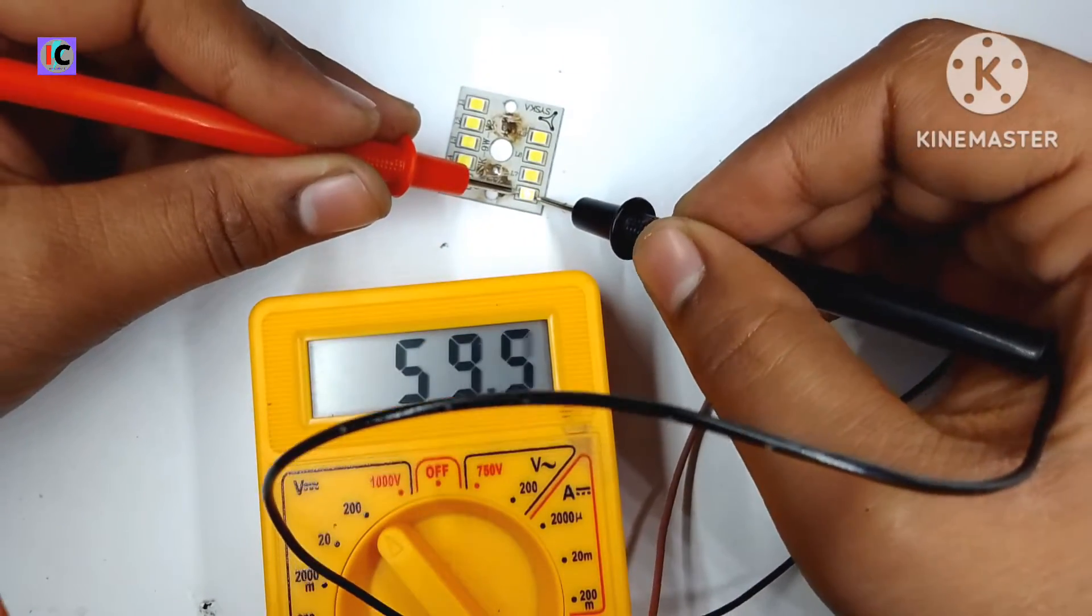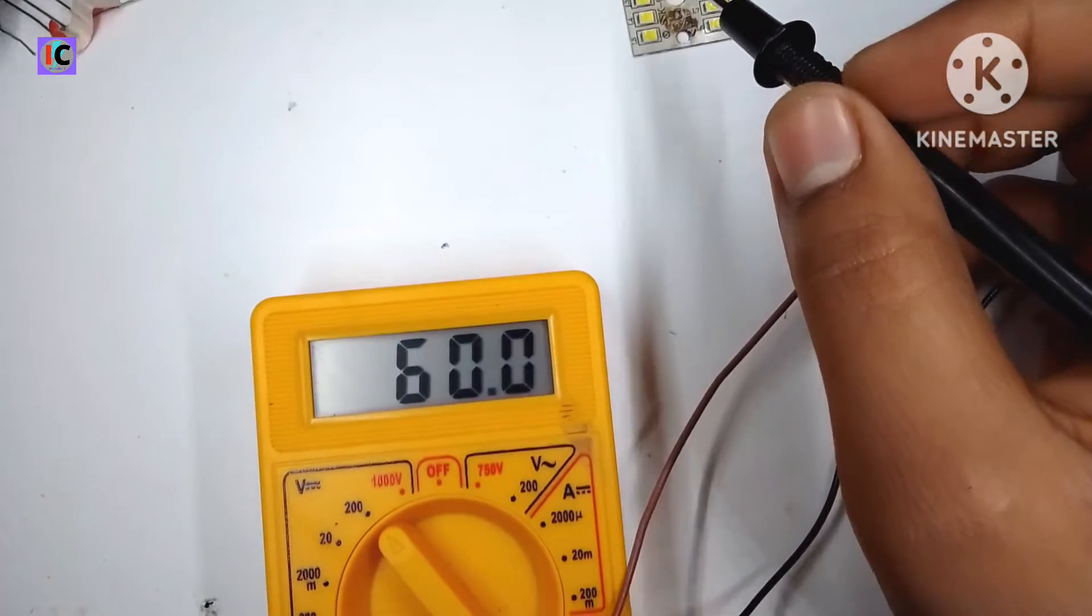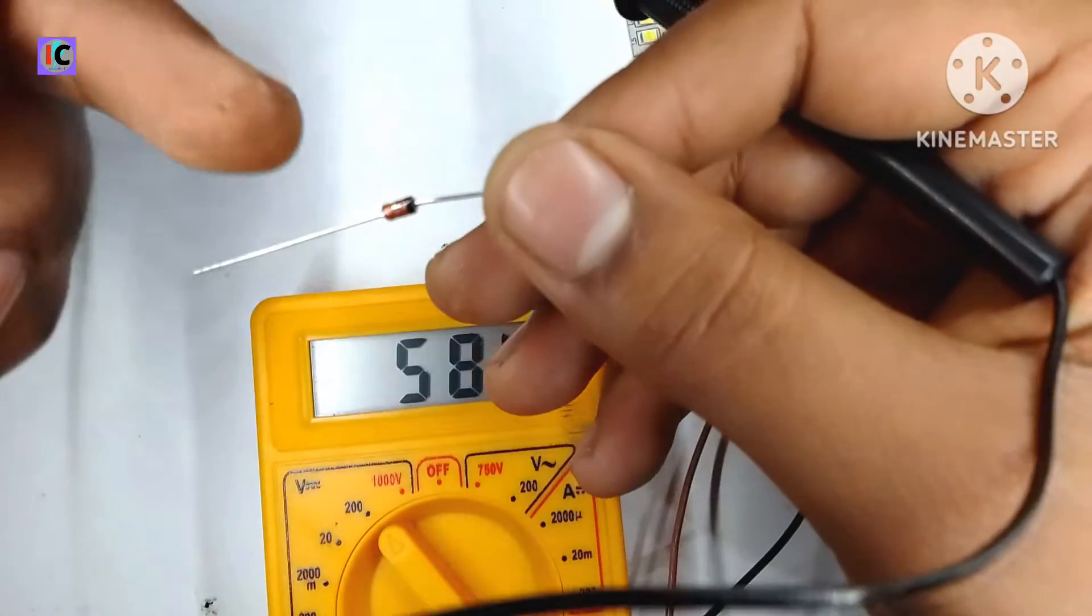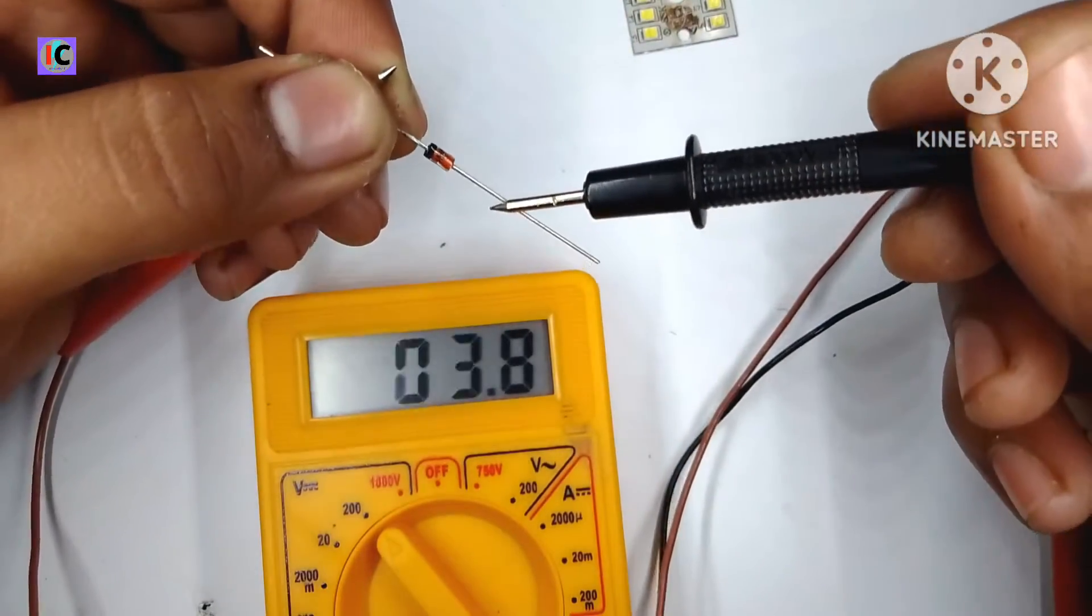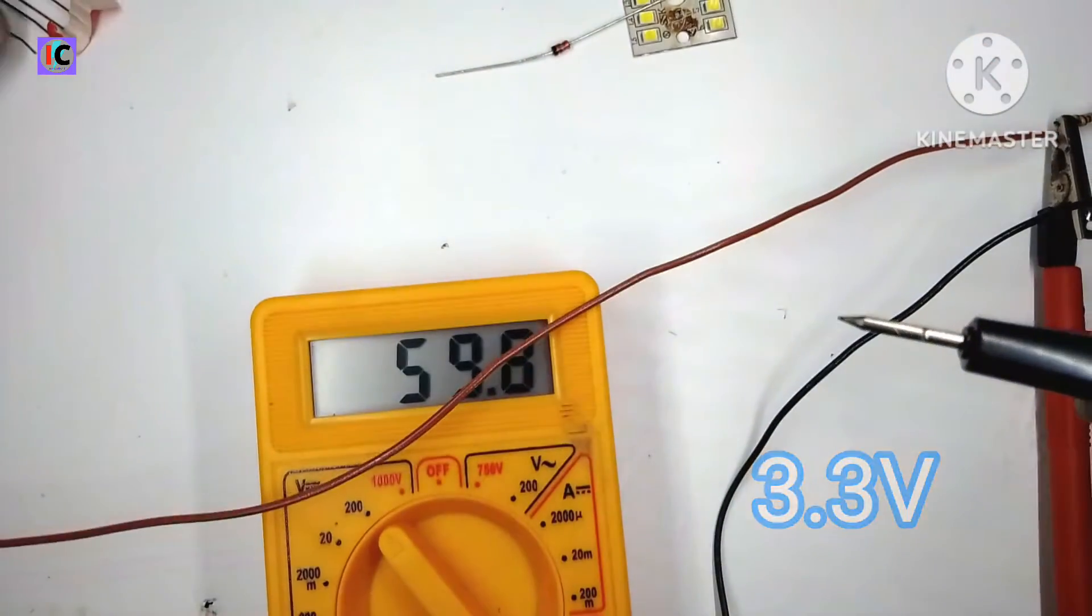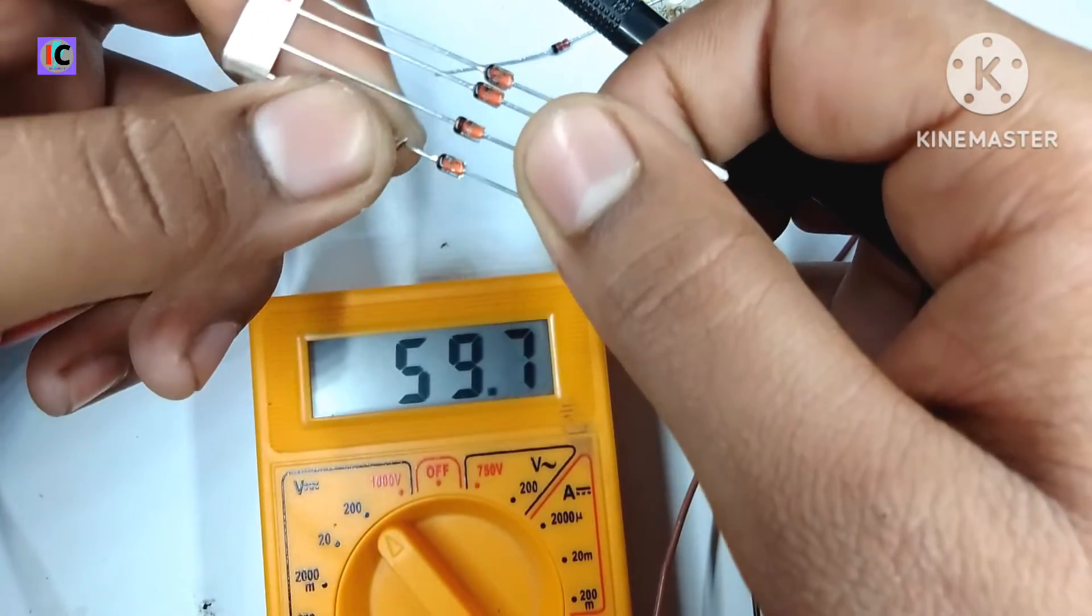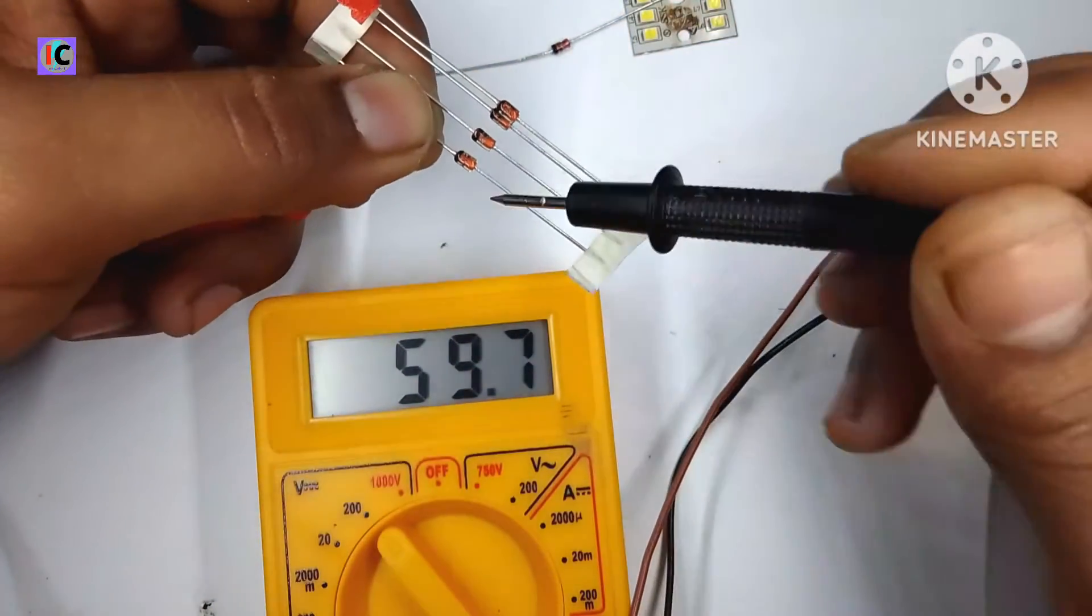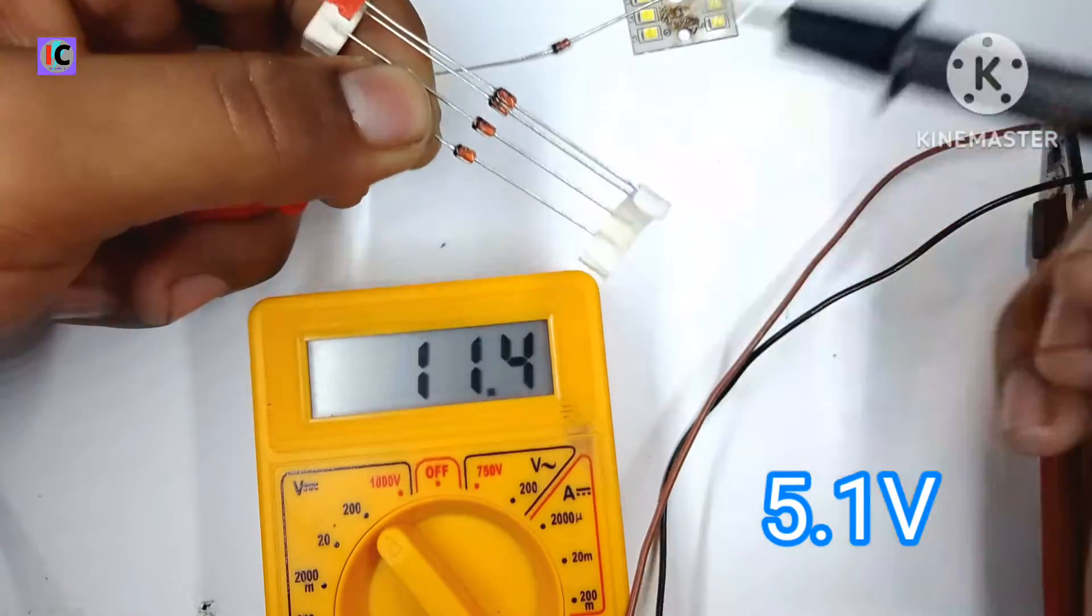Now you can test up to 60 volts and here I am testing an unknown value Zener diode. So the black ring is the positive and the other one is the negative. Now it's showing almost 3.6 volts, that's a 3.3 volt Zener diode. And this one is a 5.1 volt Zener diode.